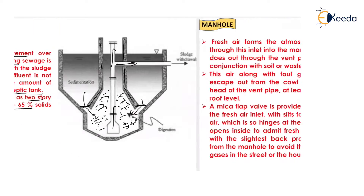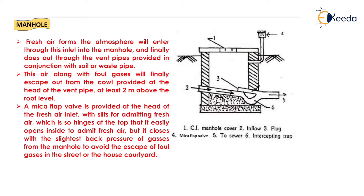A manhole is provided in pipelines and sewers for inspection purposes. In construction, at the ground level there is an access gate. From the top of the manhole, a pipe with a mica flap valve is provided at the top, and at the bottom there is an intercepting trap connected to the sewer line. Fresh air from the atmosphere enters through this inlet into the manhole by opening the mica flap valve in the downward direction.